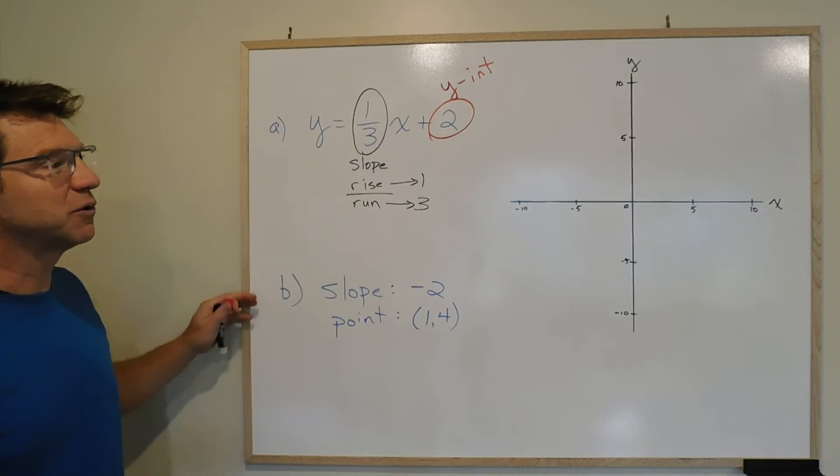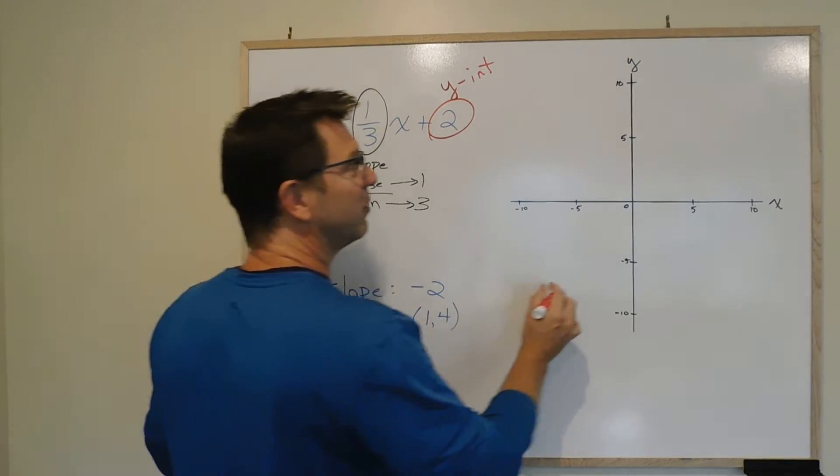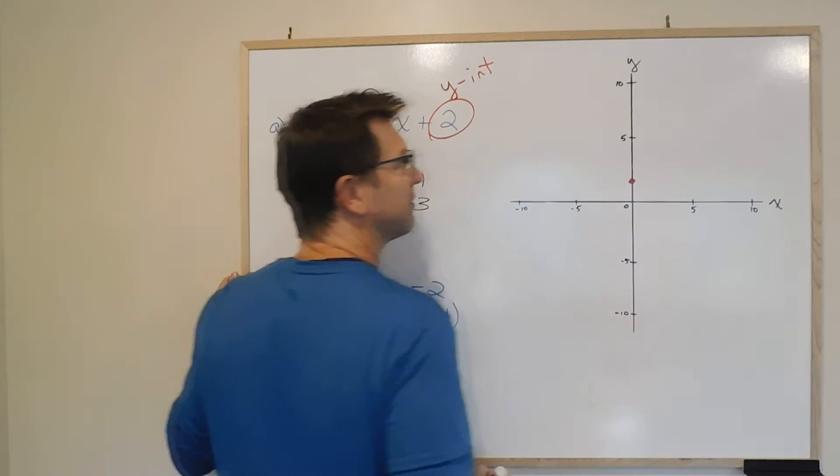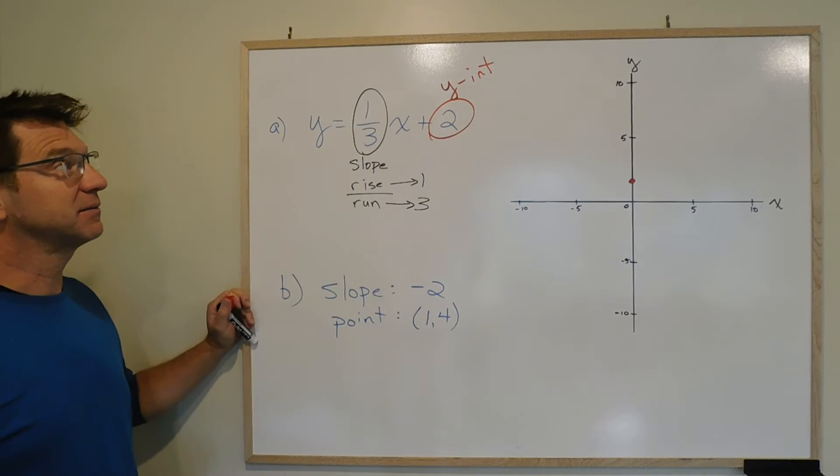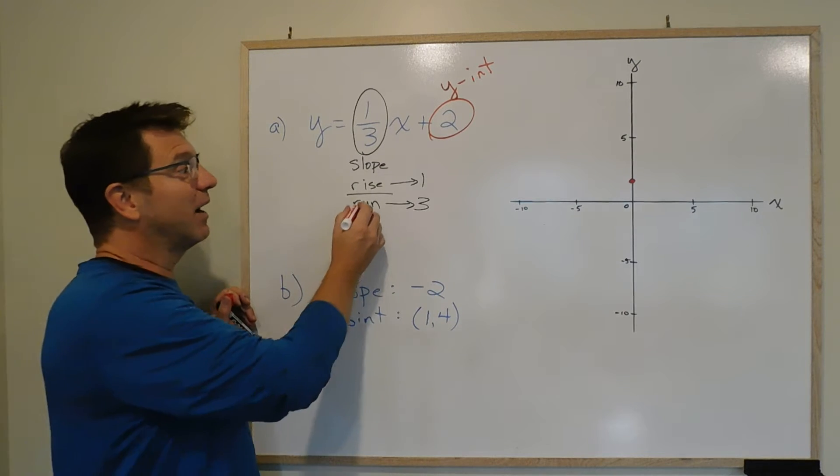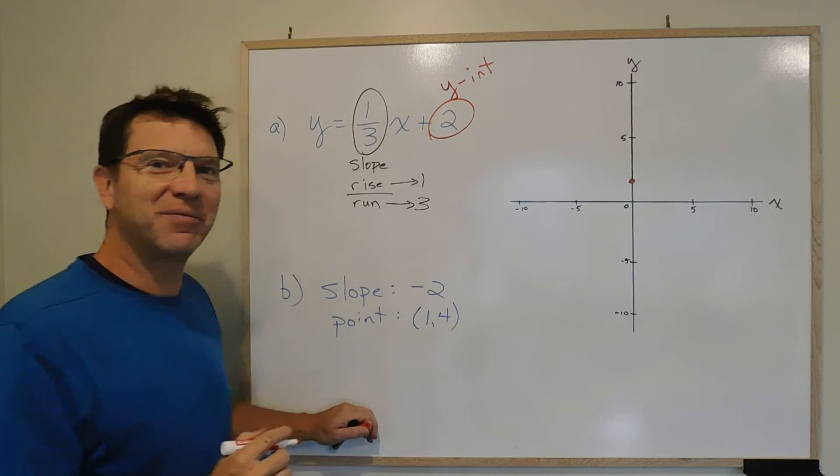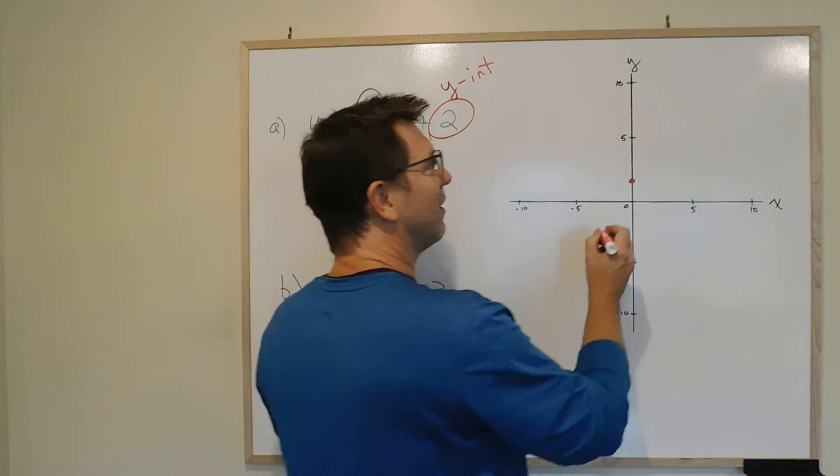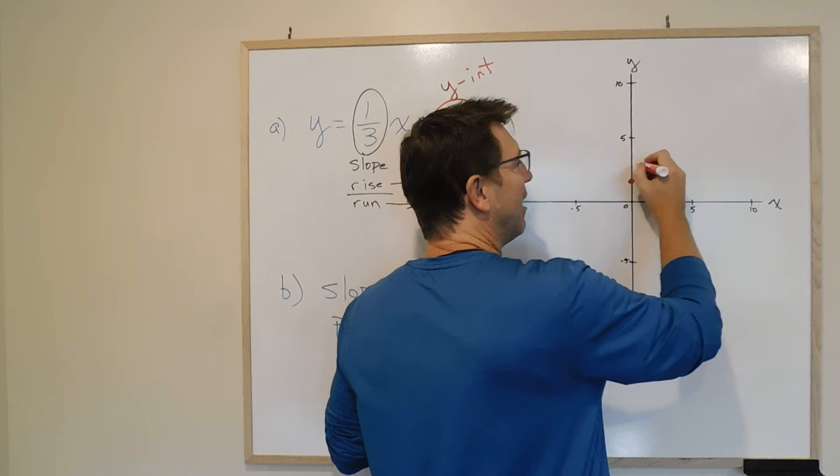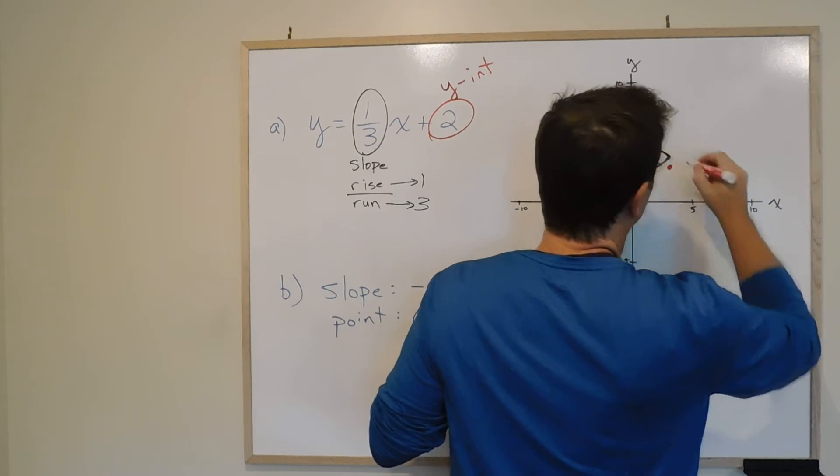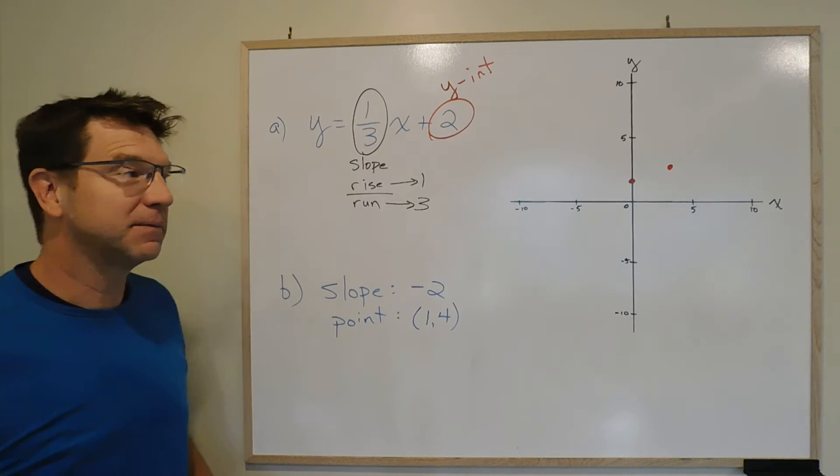And that's all we need to do. Y-intercept, so it crosses the y-axis at 2, which is right about there. That's where it crosses the y-axis. We know that the rise is 1 and the run is 3. So literally, and it's much easier on graph paper of course, but literally we are going to go up 1 and over 3. Up 1 and over 3.